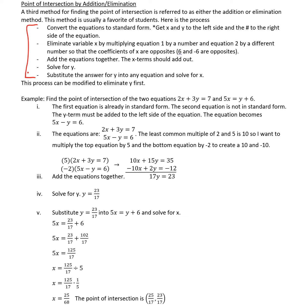First, convert the equations to standard form. That means get x and y to the left side of the equal sign and the number or constant to the right side of the equation. Now we're going to focus on eliminating the x variable, and we eliminate variable x by multiplying equation 1 by a number and equation 2 by a different number so the coefficients of x are opposites. For example, 6 and negative 6 are opposites. Please think about finding the least common multiple of the two coefficients that are in front of x.